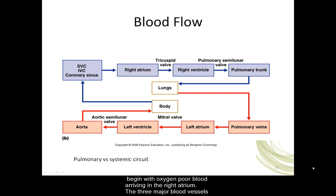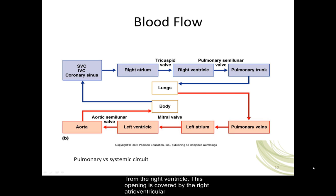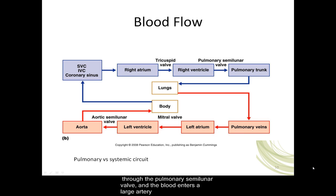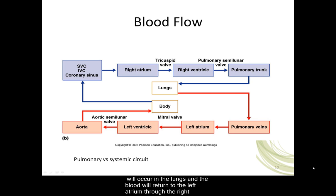Let's review blood flow through both the pulmonary and systemic circuits. Oxygen-poor blood arrives in the right atrium via the superior vena cava, inferior vena cava, and coronary sinus. When the atria contract, the blood is pushed through the right atrioventricular or tricuspid valve into the right ventricle. When the ventricles contract, the blood is pushed through the pulmonary semilunar valve into the pulmonary trunk, which marks the beginning of the pulmonary circuit. The pulmonary trunk bifurcates into the right and left pulmonary arteries. Blood enters capillary beds within the lung tissues where gas exchange occurs, and the blood returns to the left atrium through the right and left pulmonary veins. This is still part of the pulmonary circuit.